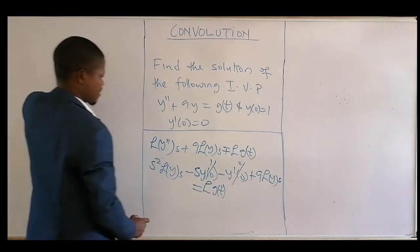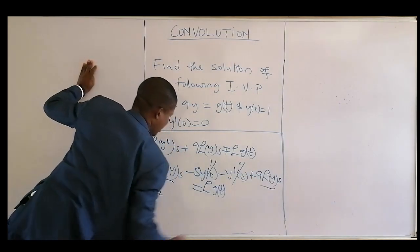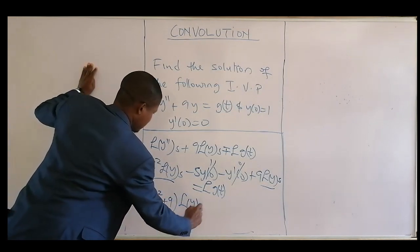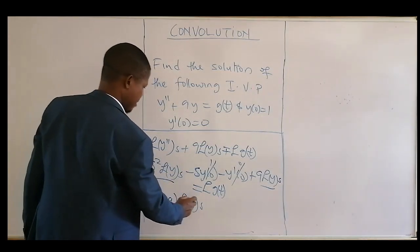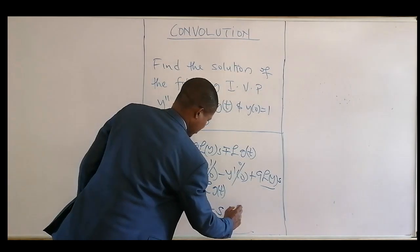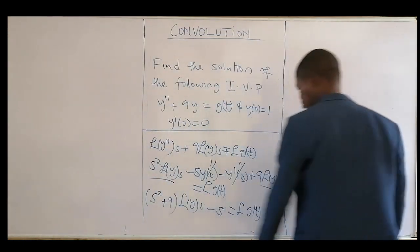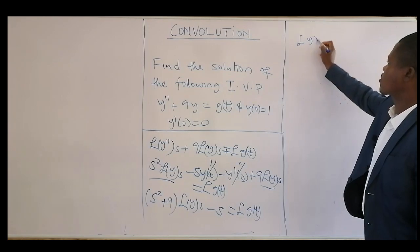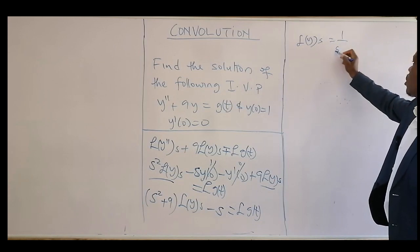We factorize: (s² + 9) times Laplace of y equals Laplace of g(t) plus s times 1, where the y'(0) term cancels since it is zero. Then we make Laplace of y the subject, giving Laplace of y equals 1 over (s² + 9) times Laplace of g(t).